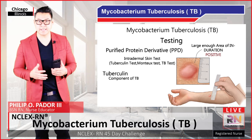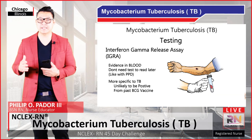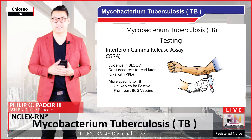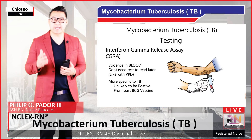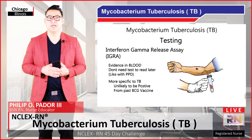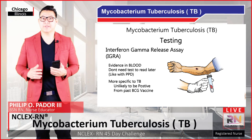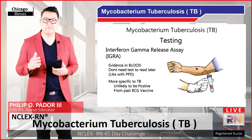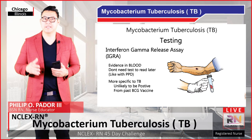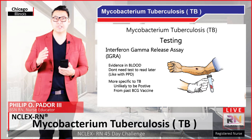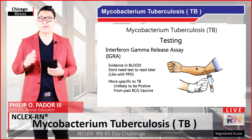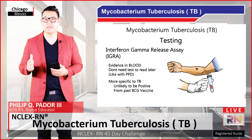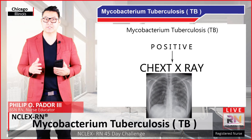As an alternative to the tuberculin skin test, there is also the interferon gamma release assay, or IGRA, which looks for evidence in the blood of previous exposure to TB proteins. Since this is a blood test, you don't need to return to have the test read like you do with the PPD. Also, the IGRA is more specific to TB rather than other types of mycobacterial infections, and is unlikely to be positive as a result of having a BCG vaccine in the past — a vaccine that protects against TB. This is a useful feature of the IGRA, since the BCG vaccine is given to many children around the world to prevent disseminated TB. After a screening test with the PPD or IGRA, anyone with a positive result typically gets a chest x-ray to look for signs of active TB.